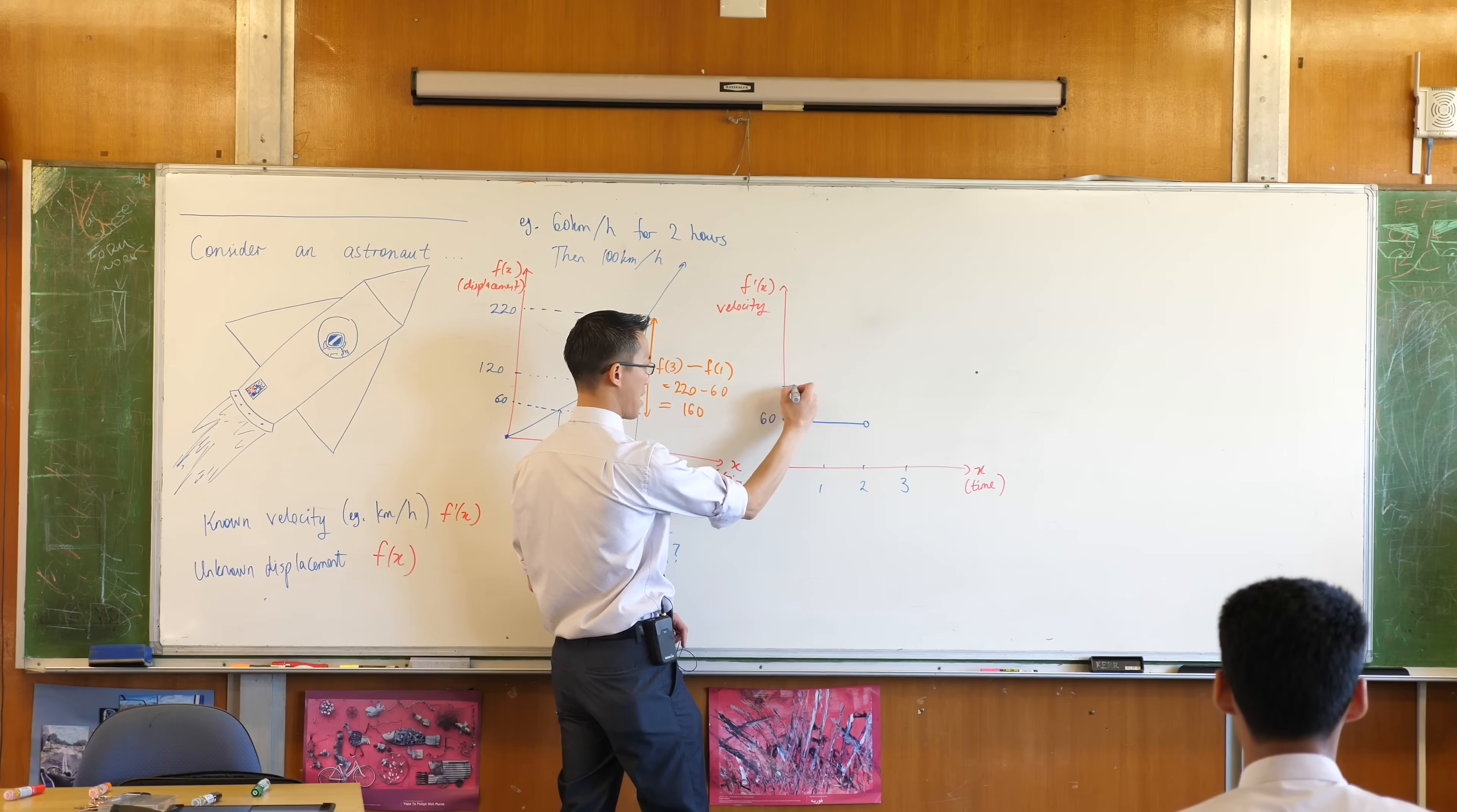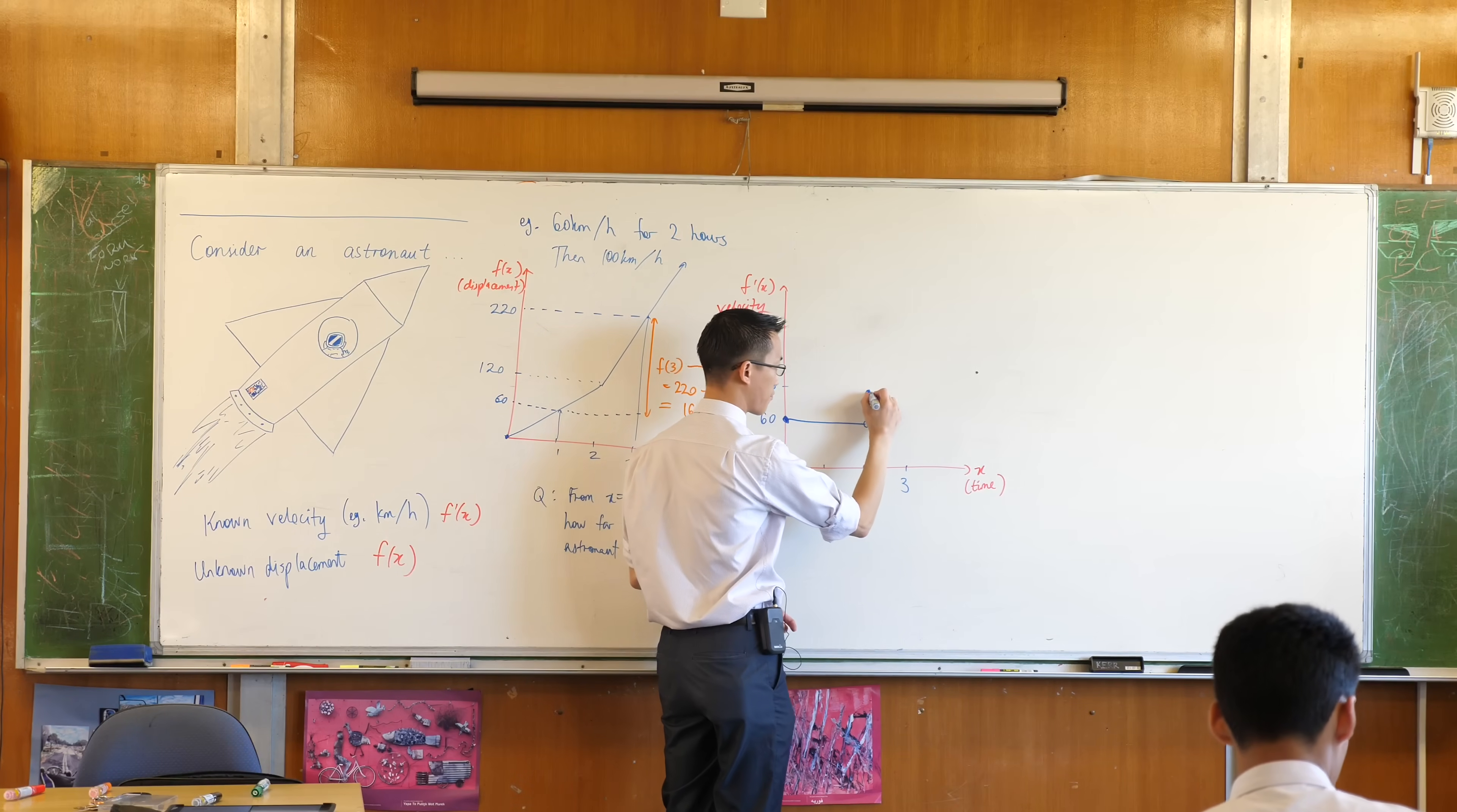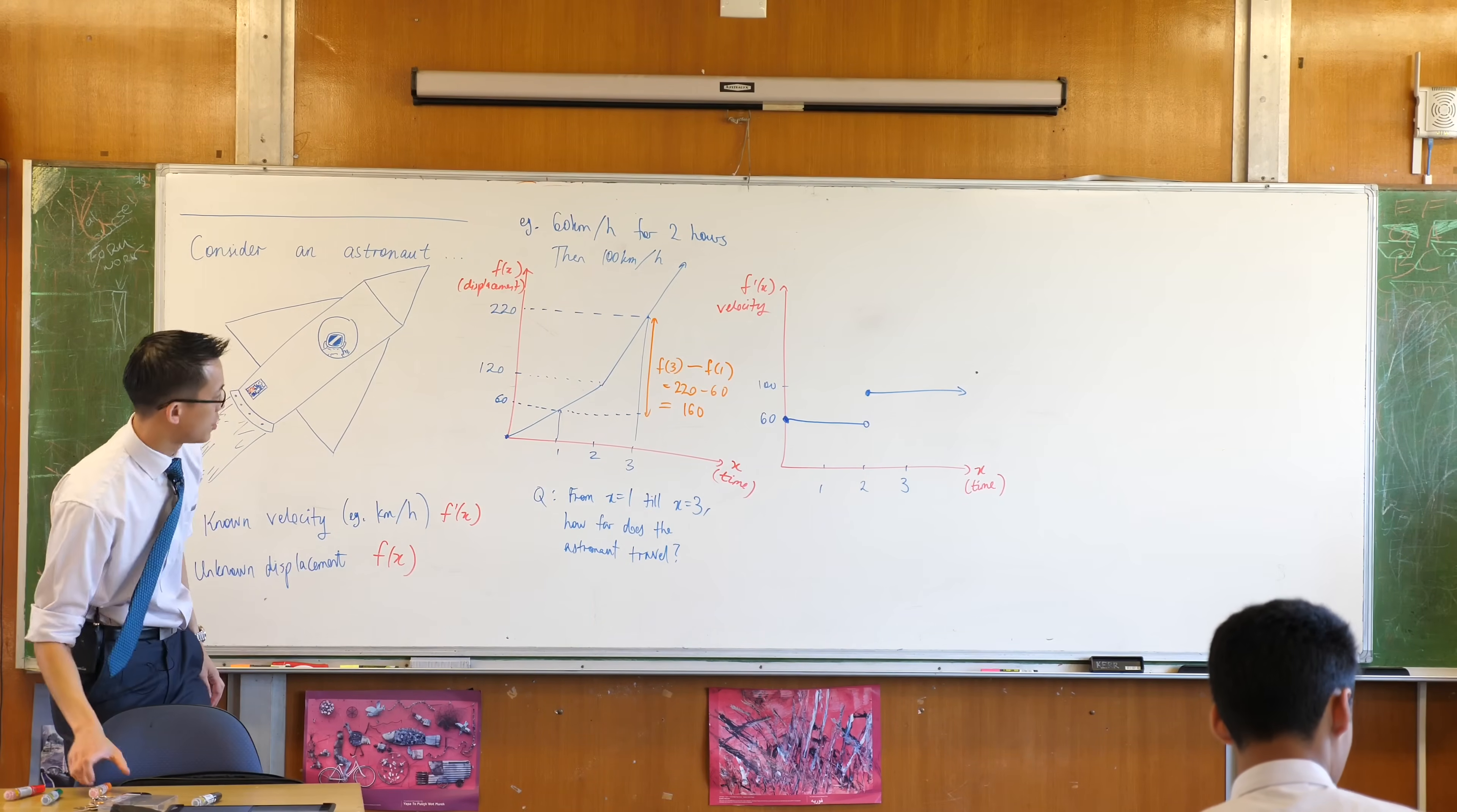Now it's going to be 100 kilometers per hour from the second hour to the end. Let me put that in roughly - you get the idea. There you go. Now, orange is the color I used.